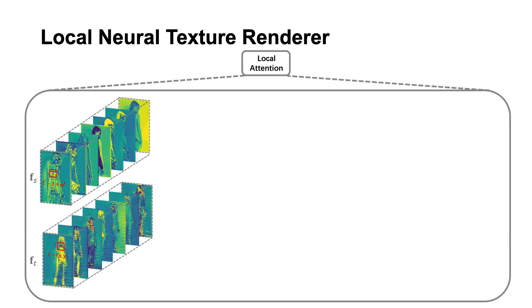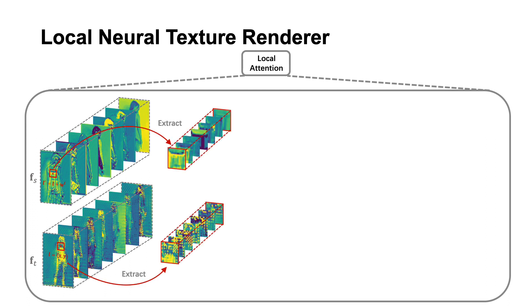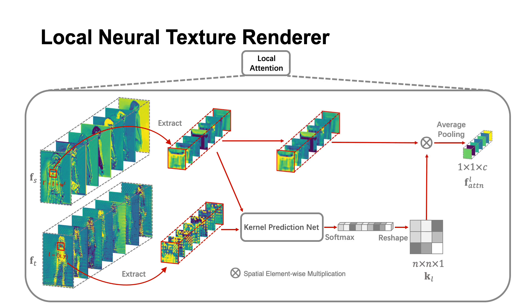For each target position L, we first extract the target local patch and flowed source local patch from the feature maps. Then, the kernel prediction net is used to predict the local attention coefficients. Finally, the attention result located at L is obtained by sampling the source feature using the estimated attention coefficients. We repeat these steps for each target position L to obtain the local attention results.